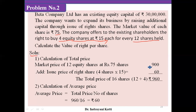Solution: Step 1 — calculation of total price. Market price of 12 equity shares: 12 multiplied by Rs.75 equals Rs.900. Issue price of rights shares: 4 shares at Rs.15 each equals Rs.60. Total price of all shares: Rs.900 plus Rs.60 equals Rs.960. Total number of shares: 12 existing plus 4 rights shares equals 16 shares.